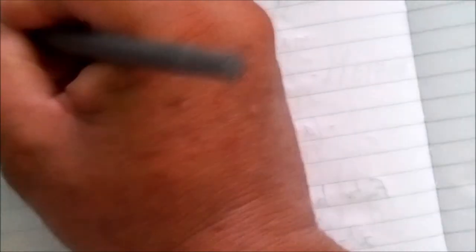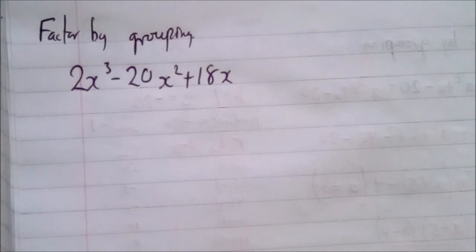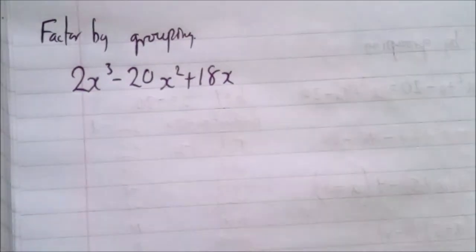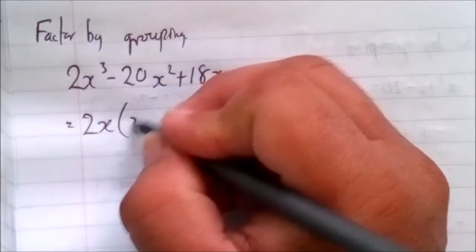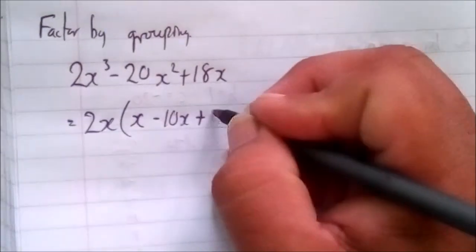Let's go to our next example of factoring by grouping. We have 2x cubed minus 20x squared plus 18x. Our strategy is to first factor out the GCF, which is 2x, since all three terms contain 2x. Factoring out 2x gives us 2x times the quantity x squared minus 10x plus 9.